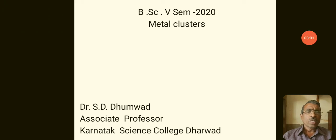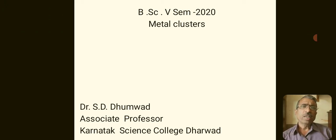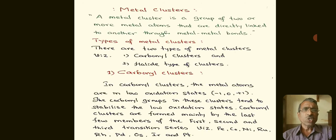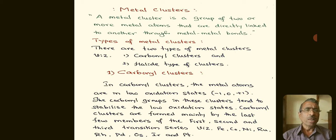Dear students, today let us study about the topic metal clusters. A metal cluster is a group of two or more metal atoms that are directly linked to one another through metal-metal bonds.